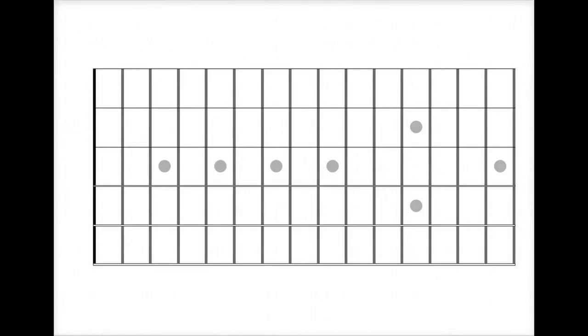We're continuing our series on dominant seven chords. Today we're looking at the B-flat dominant seven chord. We start here with a B-flat and we need a major third because a dominant seven chord is a major chord with a minor seventh added to it.